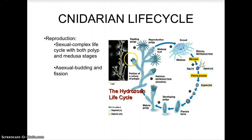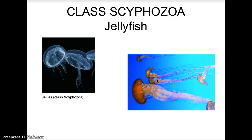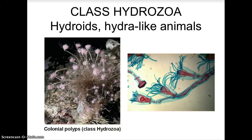Sexual reproduction involves a complex life cycle of both polyp and medusa stages, and asexual reproduction includes budding and fission. Classes of cnidarians in phylum Cnidaria include: class Anthozoa, which includes sea anemones and corals; class Scyphozoa, which are the true jellyfish; and class Hydrozoa, which are hydroids and hydroid-like animals — key representatives in their adult life are in the polyp stage, with tentacles and mouth upward.